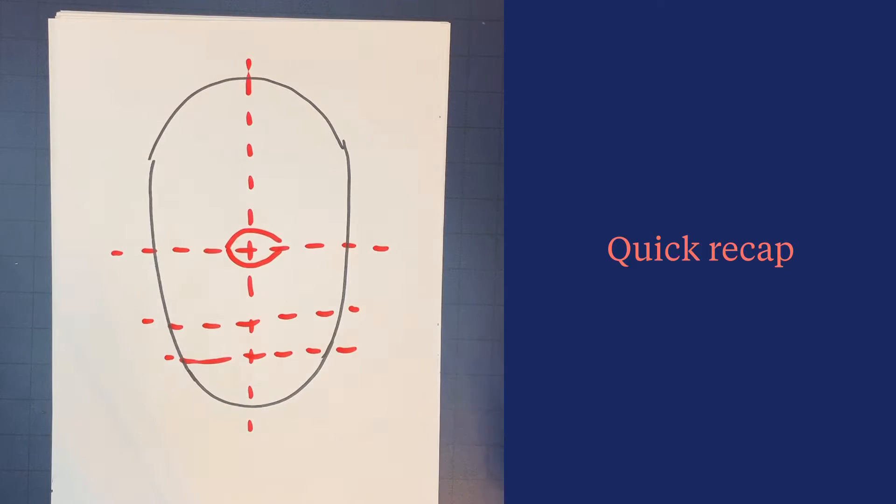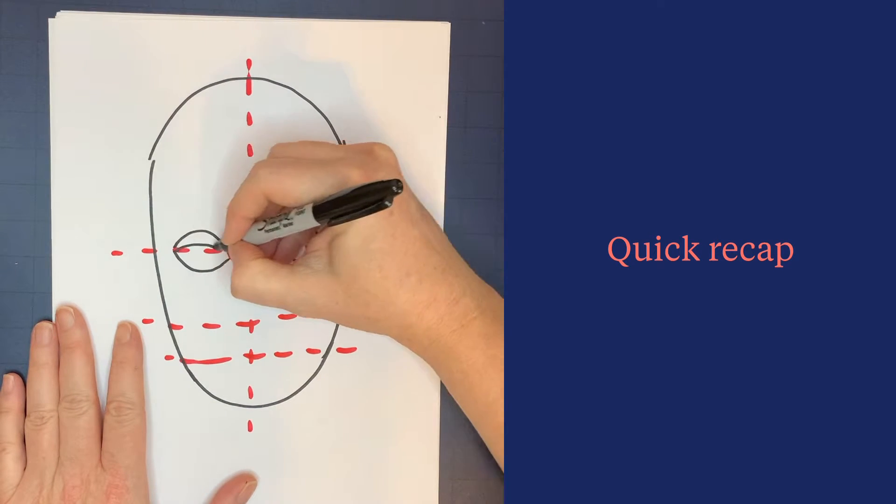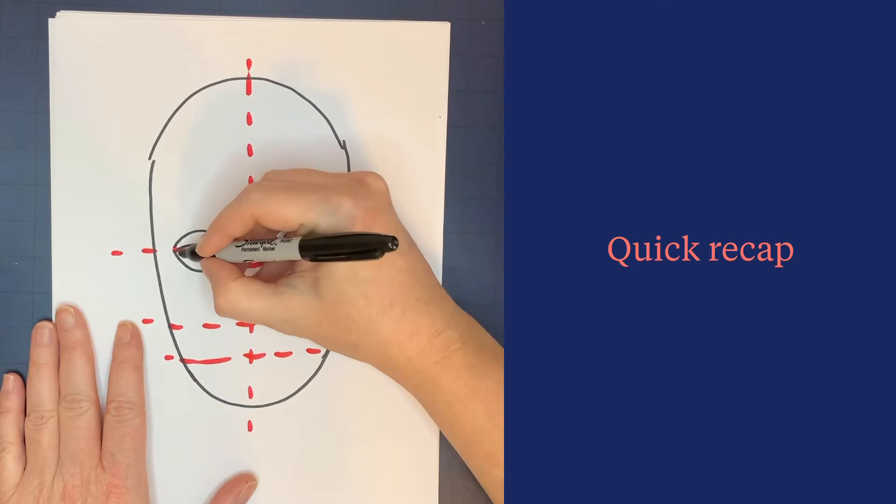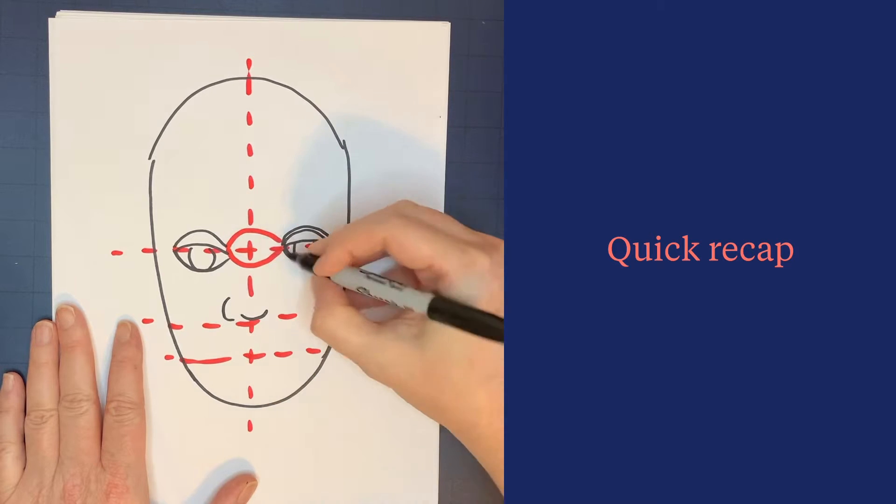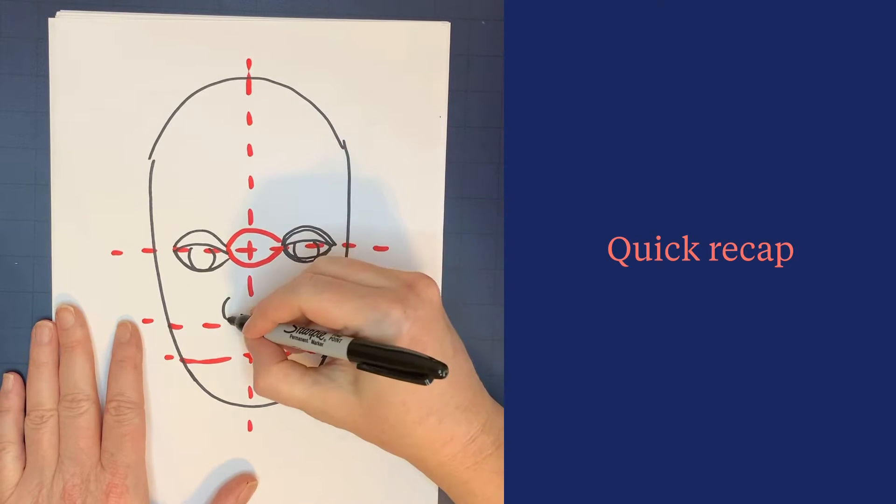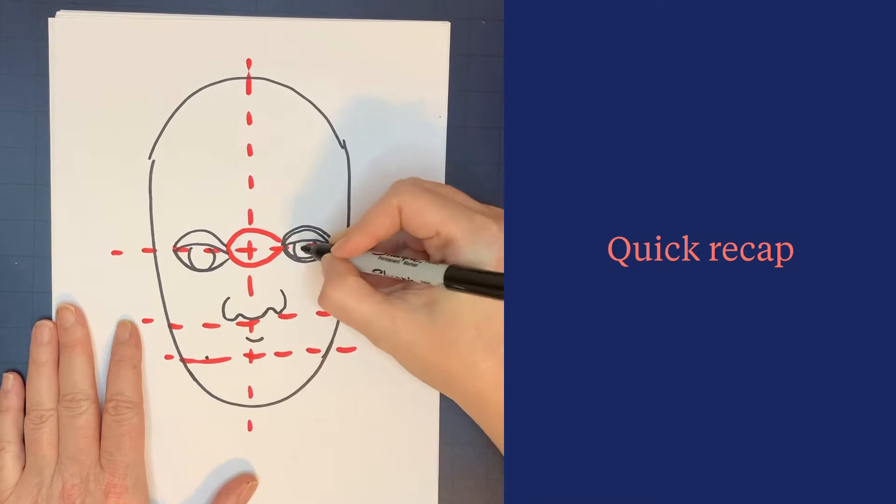Start with your eyes on the first horizontal guideline, including your eyelid and iris. The nose sits on the next line down, and the next line down is your mouth.